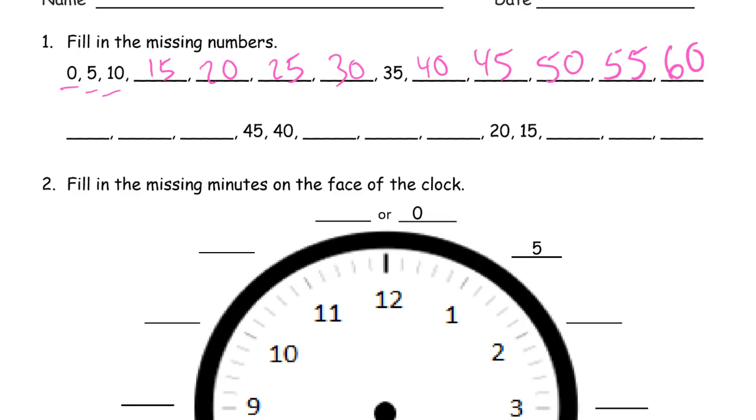And then you can see the numbers are getting smaller. So after 60, we're going back down again. Starting at 60: 55, 50, 45, 40, 35, 30, 25, 20, 15, 10, 5, 0.